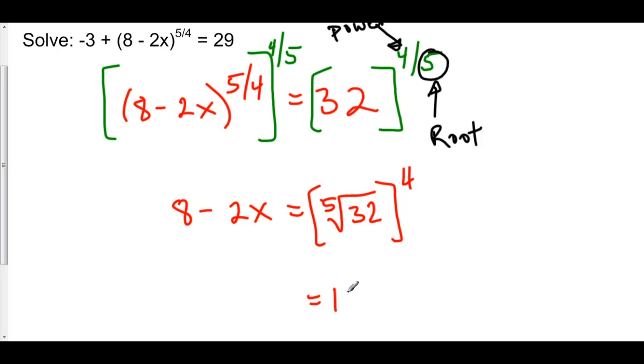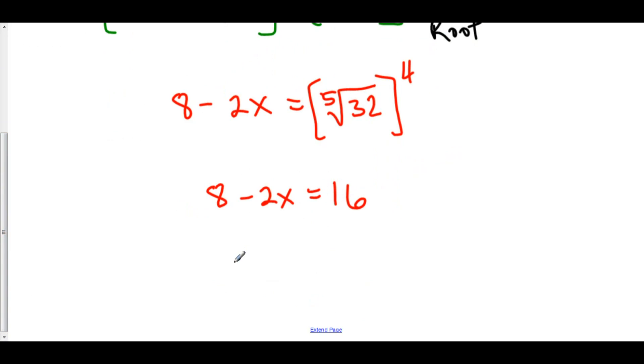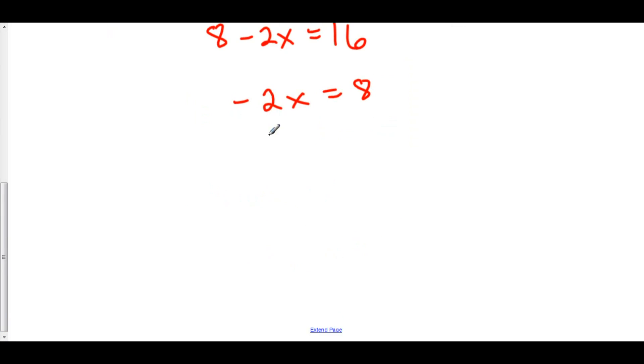So on the right hand side, we have 16. On the left hand side, we still have 8 minus 2x. Now to solve this, subtract 8. We have negative 2x is equal to positive 8. Divide both sides by negative 2, and x is equal to negative 4.